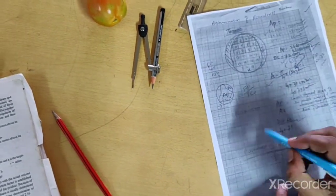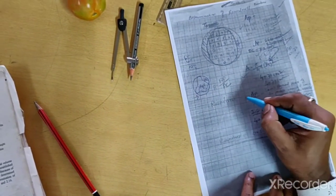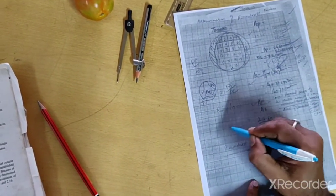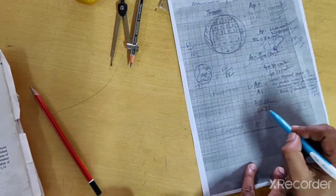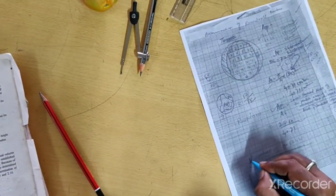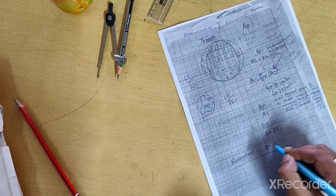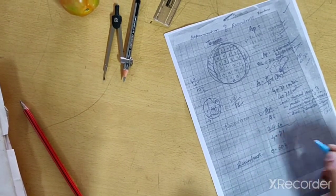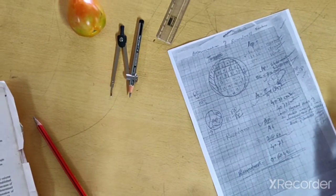So according to the definition, we have to put the value of AP and AC in this formula. Roundness equals AP by AC. By putting this value, we will get the value of roundness equals 0.6042. So this is the roundness of the tomato.